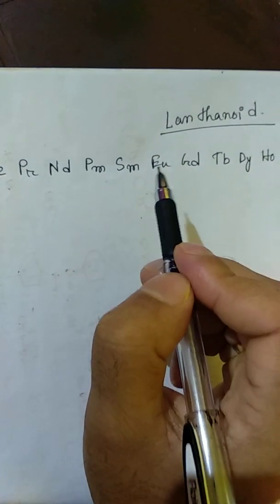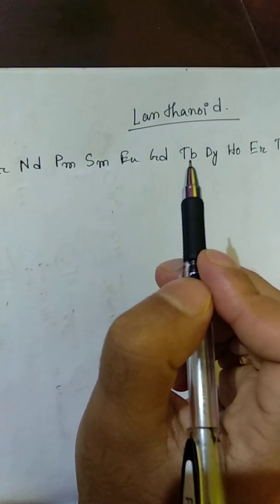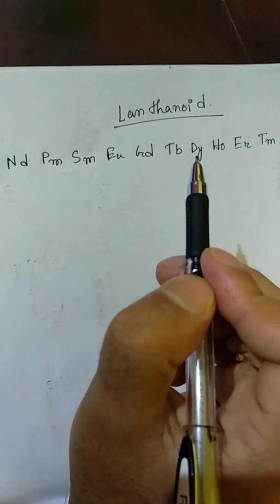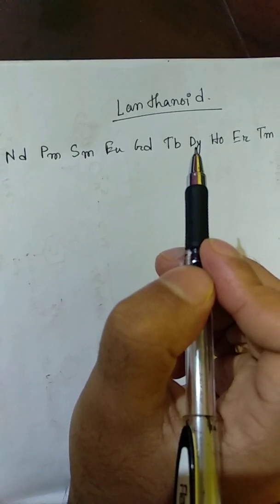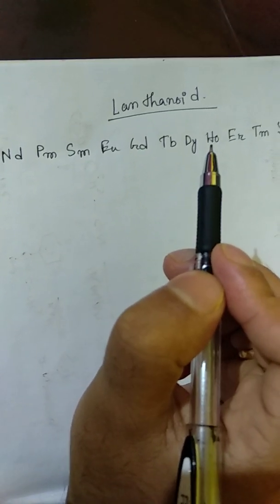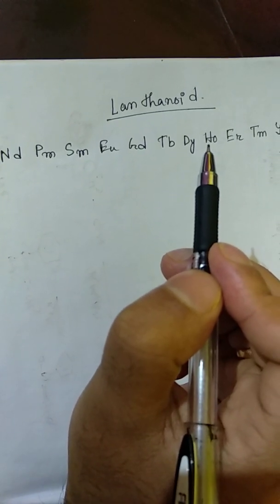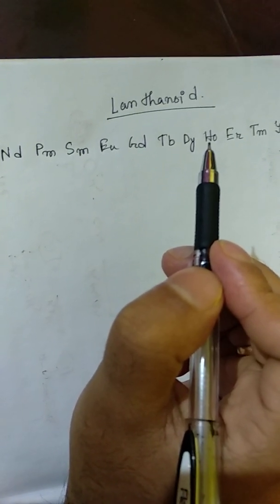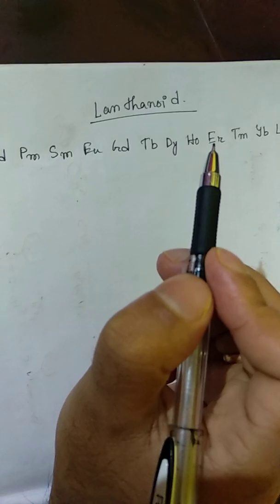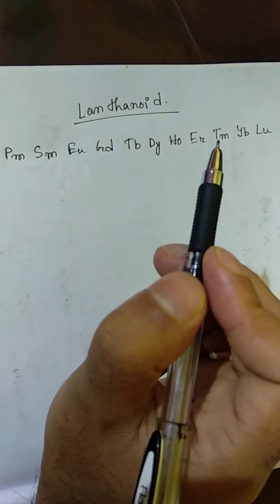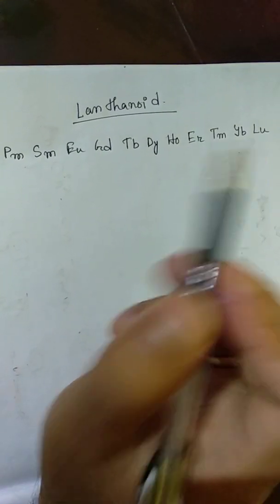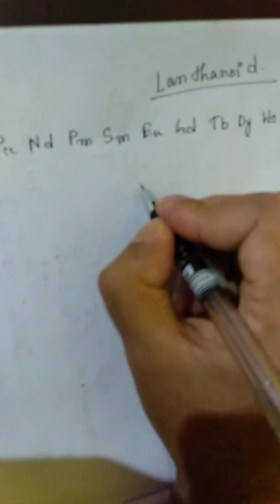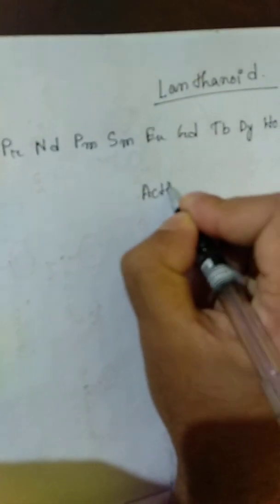So we have covered the lanthanoid series elements and their symbols. Next, moving on to the actinoid series — let's see the actinoid elements now.